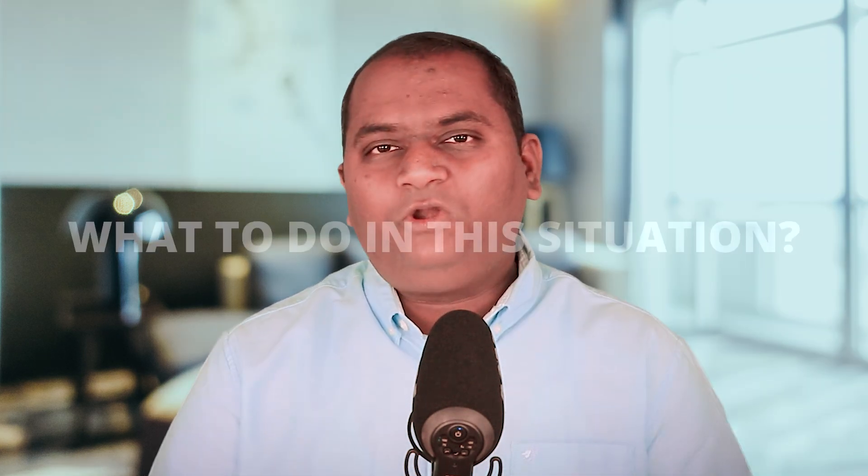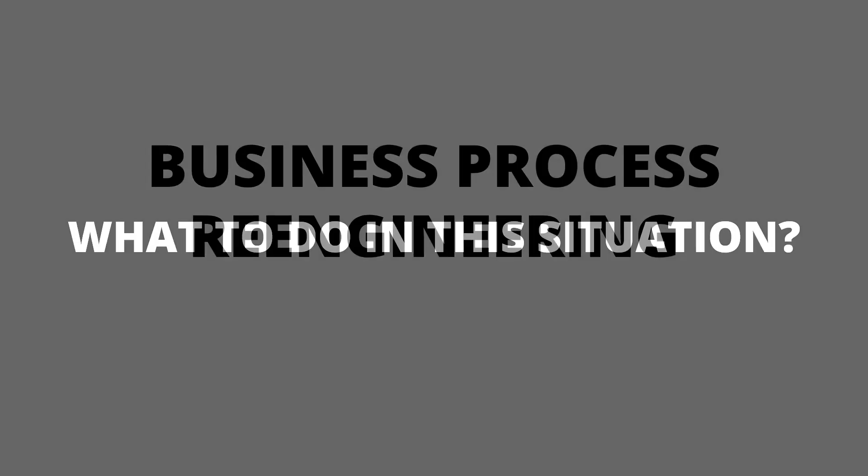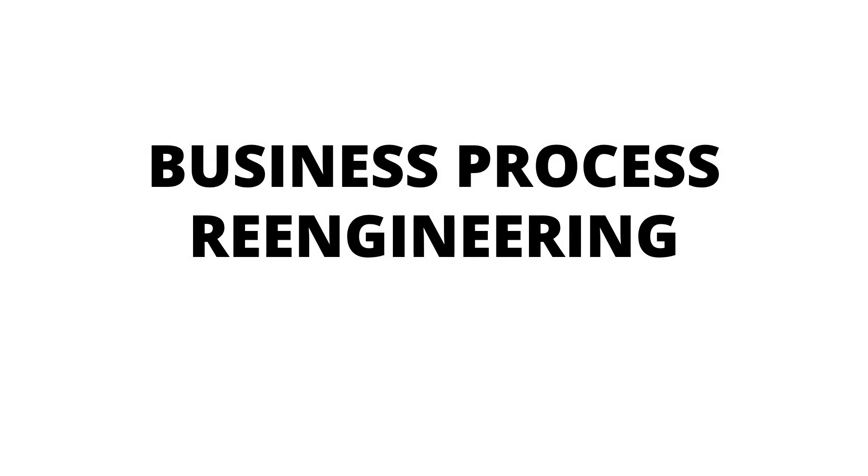Your business process has reached a performance level beyond which it is unable to improve any further. After reaching this level, even if you try to do a Six Sigma project, your business metrics do not improve. What to do in this situation? This is what we will discuss in this video. We will talk about a technique called Business Process Re-engineering, popularly known as BPR.